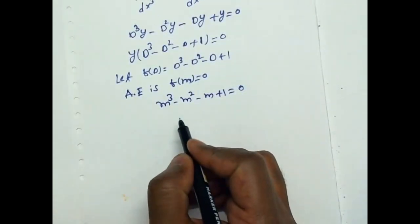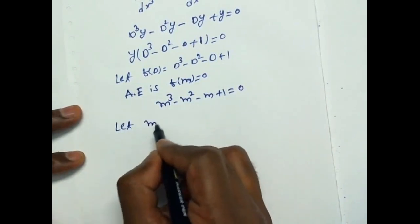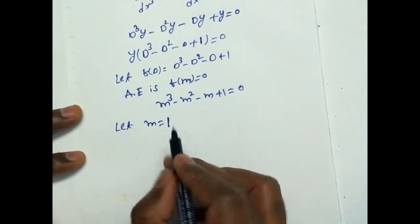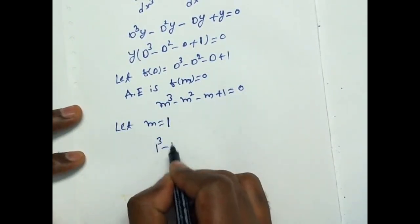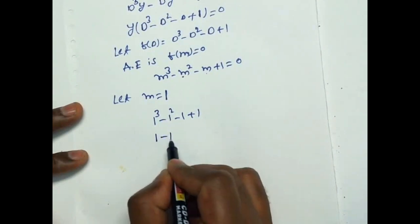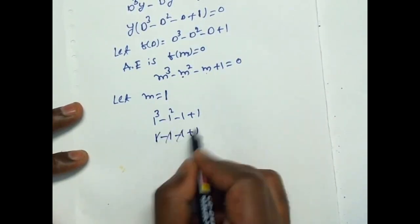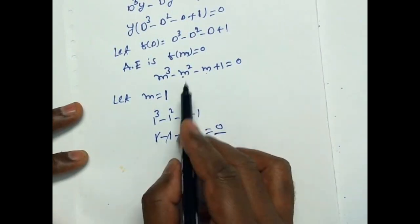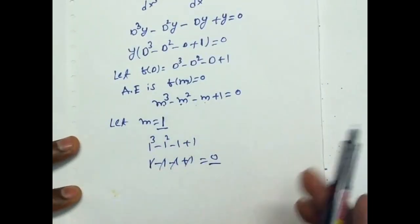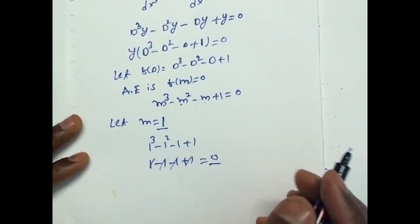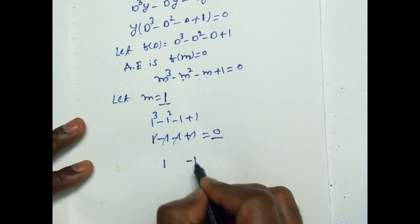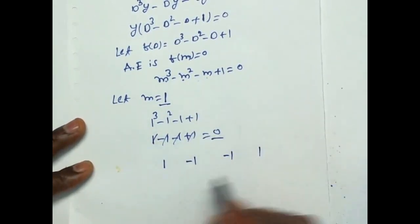Now we find the roots. Let M equal 1. Substituting: 1³ minus 1² minus 1 plus 1 equals 1 minus 1 minus 1 plus 1, which equals 0. So M equals 1 is a root.